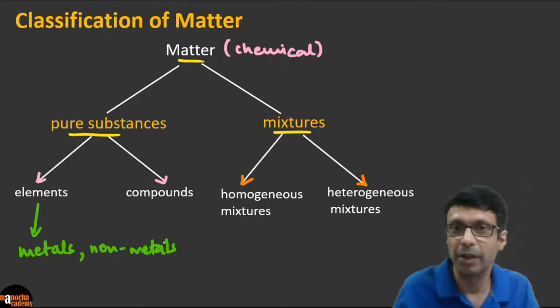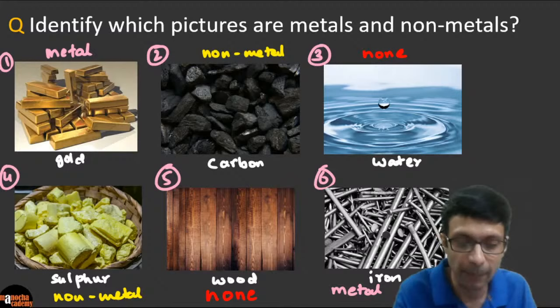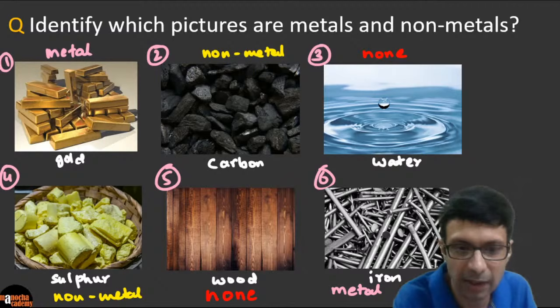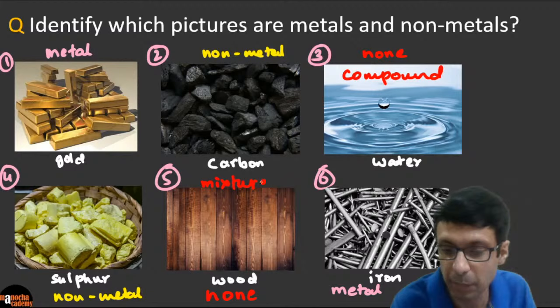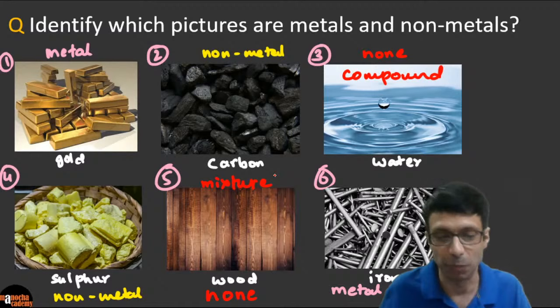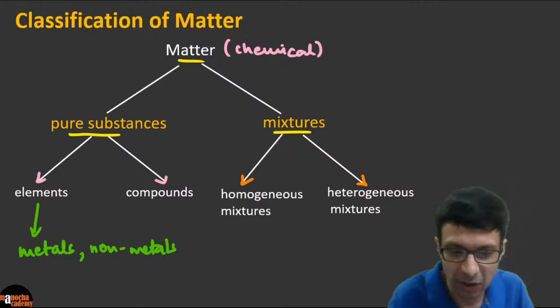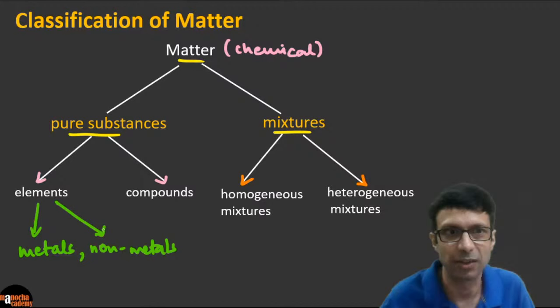Water is a compound — that's why it's neither a metal nor a non-metal. Wood is a mixture — so it is neither a metal nor a non-metal either. Metals and non-metals fall under elements only.